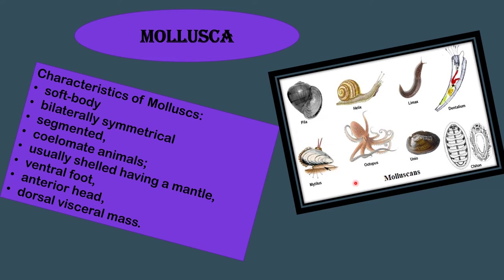Molluscs can be terrestrial or aquatic. They have a soft, unsegmented body divided into three parts: the head, visceral mass and a muscular foot. Most molluscs have a hard shell covering their bodies, and the muscular foot helps in locomotion. Snails and mussels are examples of molluscs.